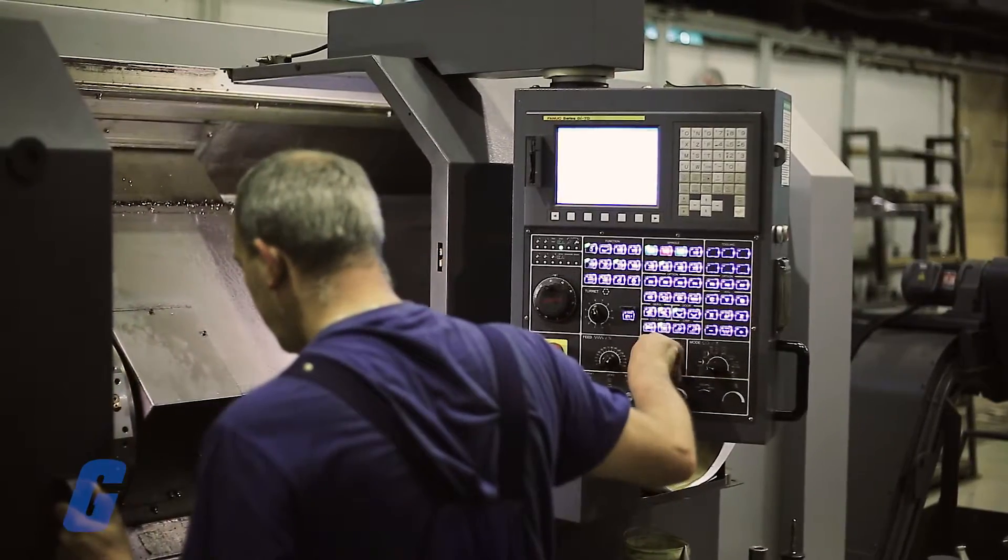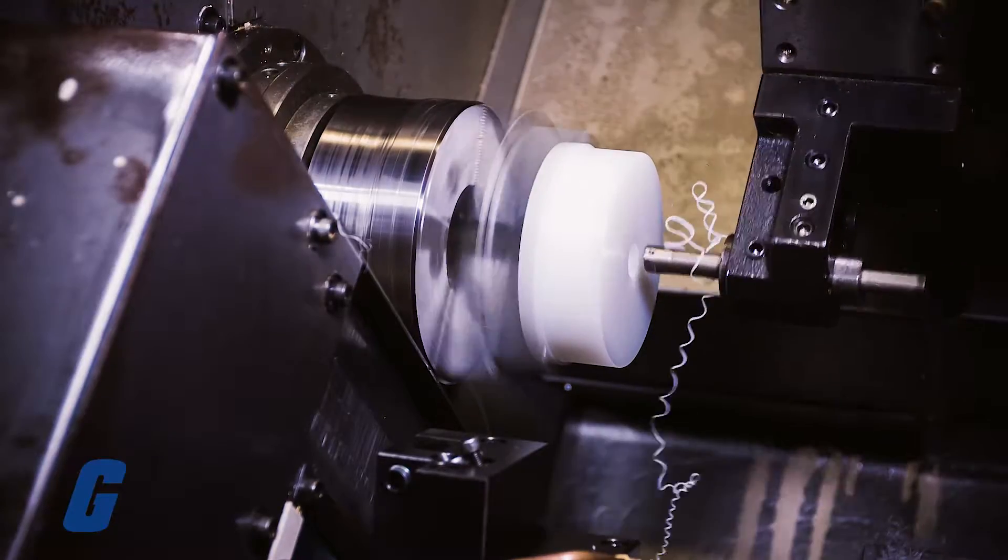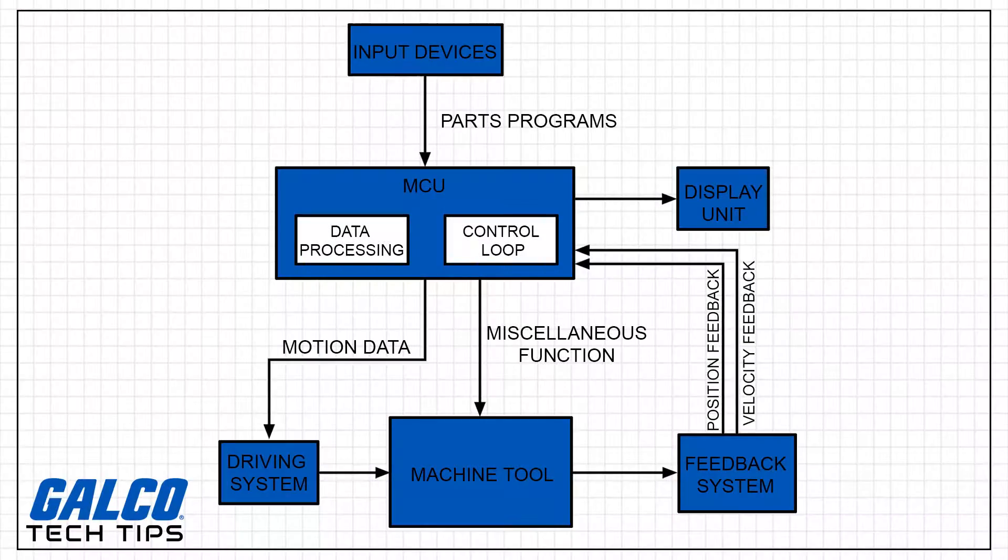They are commonly used in manufacturing to machine metal and plastic parts. The following are main components of a CNC machine.